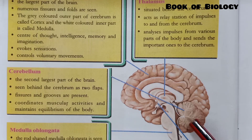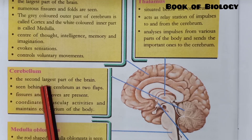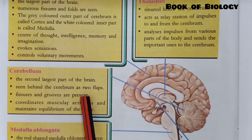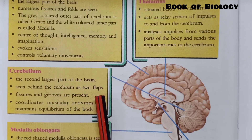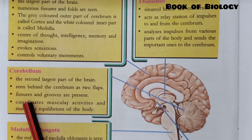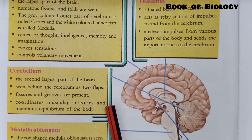The next part is the cerebellum, which is the second largest part of the brain. It is seen behind the cerebrum as two flaps — right and left. Fissures and grooves are also present here. Its function is to coordinate muscular activities and maintain the equilibrium of the body.